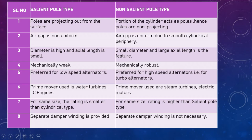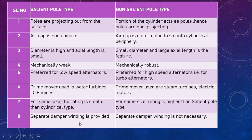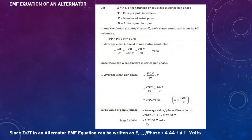Separate damper windings are provided in salient pole type rotors, but they are not necessary in non-salient pole type rotors. In salient pole type, a damper winding is provided to avoid hunting — that is, fluctuation in the output voltage. The provision of damper winding is not necessary in non-salient pole type rotors.